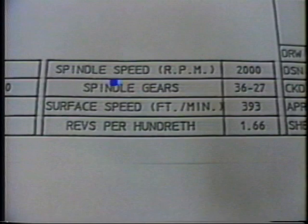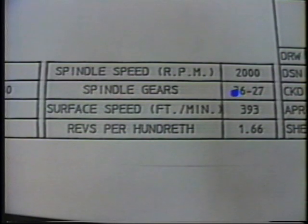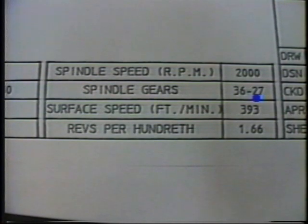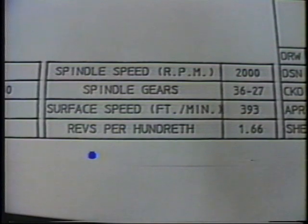Spindle speed is listed in revolutions per minute. Spindle gears used to achieve the desired spindle speed are listed numerically as the tooth number of the drive gear followed by the driven gear. Spindle change gears will be discussed further in Tape 5. The surface feet per minute is a factor of the stock OD and the surface footage is designated in feet per minute. Spindle revolutions during 1 cam hundredth during the work cycle is listed as revs per hundredth.